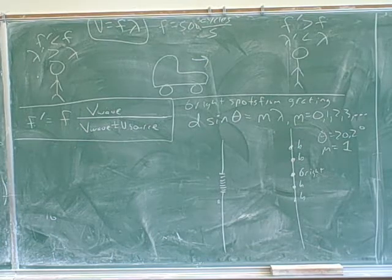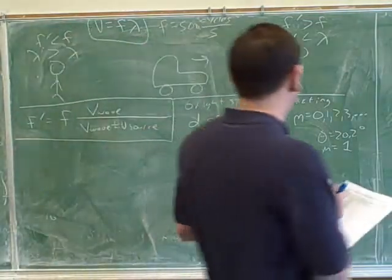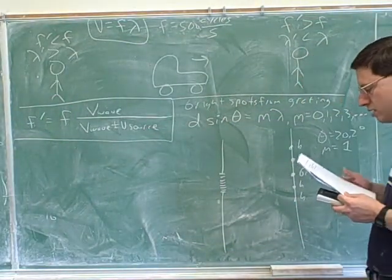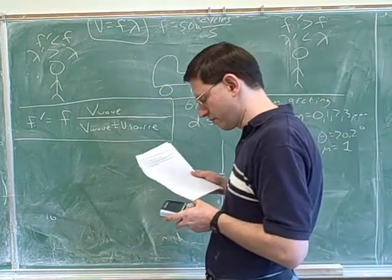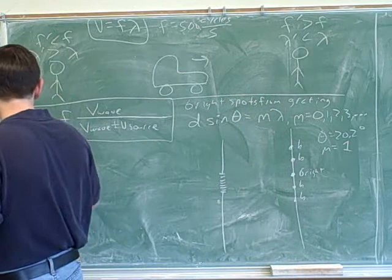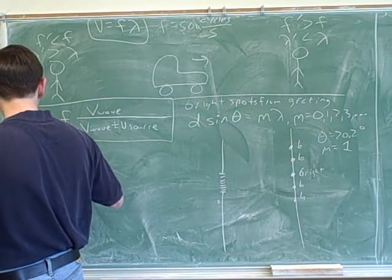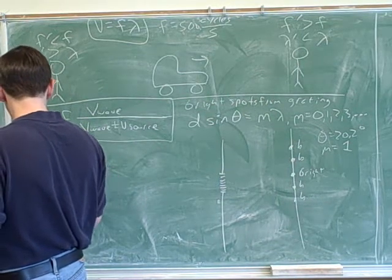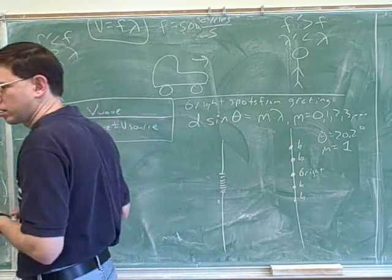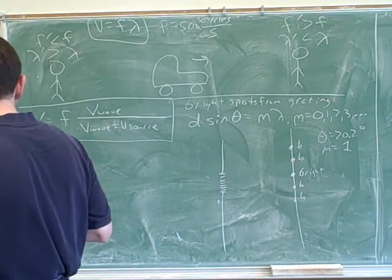Okay, now we always have to take care of the units. Is there anything here that wasn't in standard units? So five hundred lines per millimeter. Right, so how can we deal with that? So that's five hundred times one thousand. So five times ten to the fifth lines per meter.